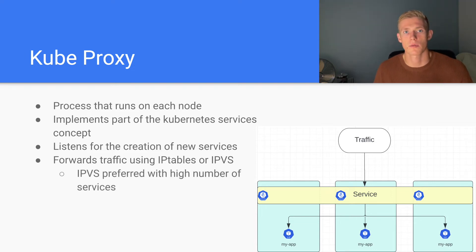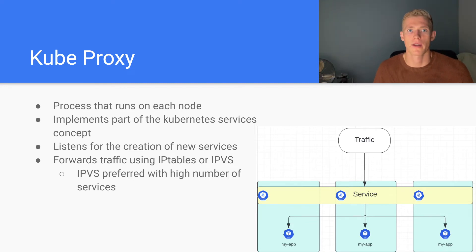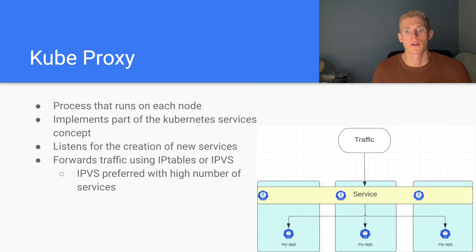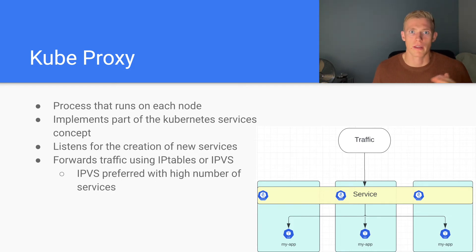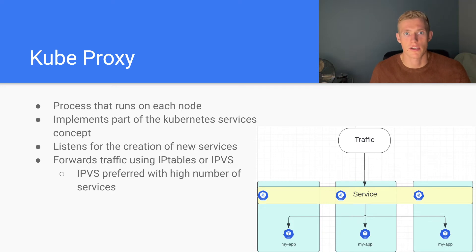IPVS is the preferred method when we have a high number of services running in our cluster. With IP tables we have to iterate through each item in the IP table in order to find the particular entry we are targeting. With IPVS there's slightly more intelligent routing, and the key thing to understand is that if we had say a thousand or two thousand services in our cluster, we would have to iterate through all of those items on each request, which would cause performance issues.